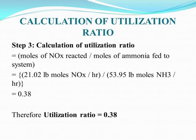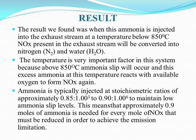The utilization ratio calculation involves: Step 1, calculating moles of ammonia feed to the system; Step 2, calculating moles of NOx in the reactor; and Step 3, calculating the utilization ratio, which is 0.38. This should be kept low — a higher utilization ratio (0.7–0.8) means higher ammonia requirement.